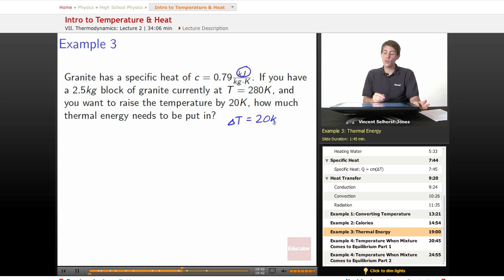C is equal to 0.79 kilojoules per kilogram times Kelvin, and 2.5 kilograms is the amount of our mass, then we have Q is equal to the specific heat times the mass times the change in the temperature.